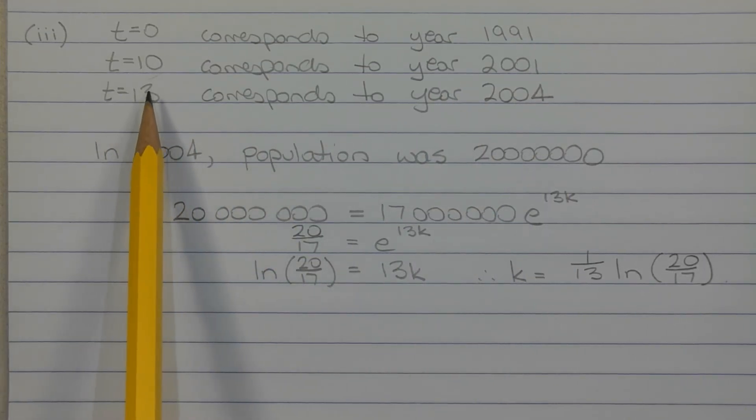Applying the boundary condition T equals 13, population 20 million, into the formula P equals A times E to the power of KT. Now that we've found the value of A in part two, which was 17 million, we get 20 million is equal to 17 million times E to the power of 13K.